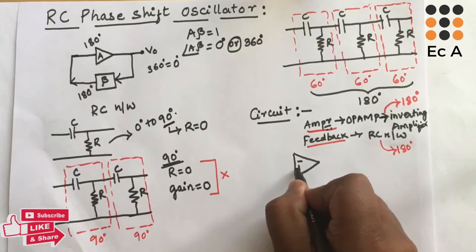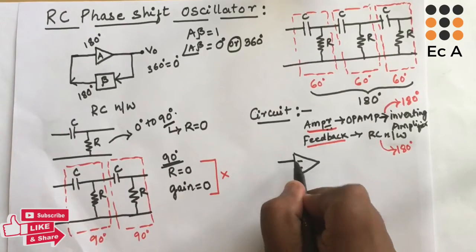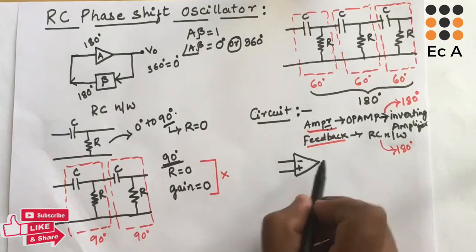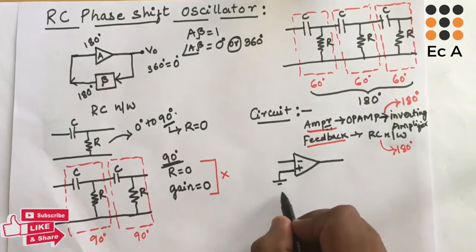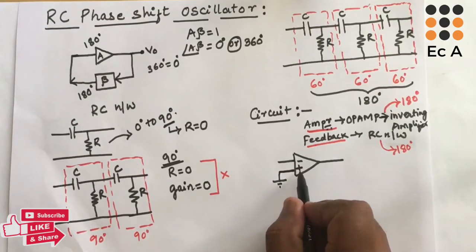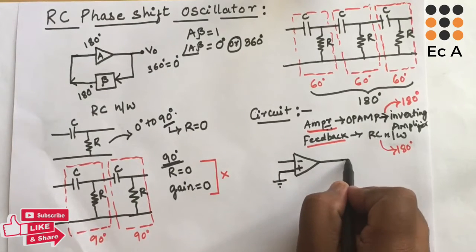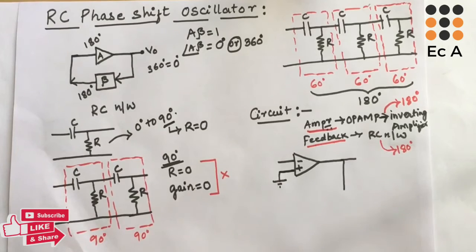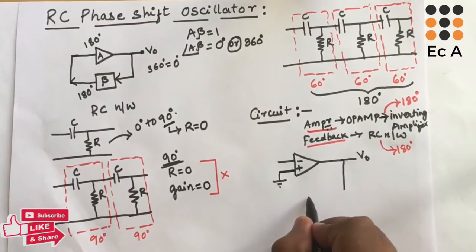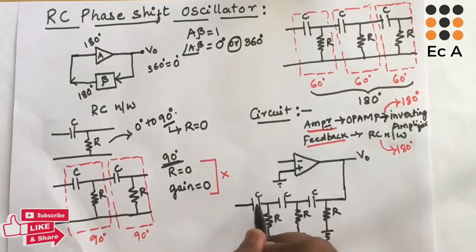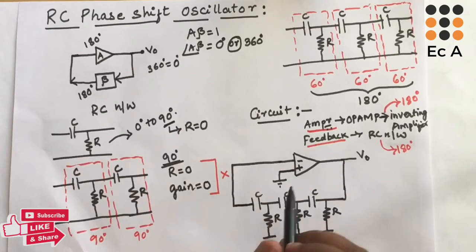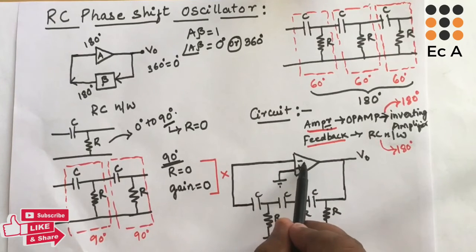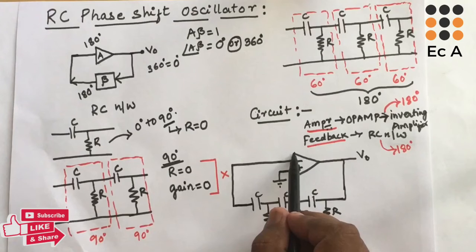Let us draw the circuit. Take an op-amp with inverting and non-inverting terminals — the negative sign indicates the inverting terminal and the positive sign indicates the non-inverting terminal. Connect the non-inverting terminal to ground. The output of the op-amp is given as the input to the RC network, and the output of the RC network is connected back to the inverting terminal of the op-amp.